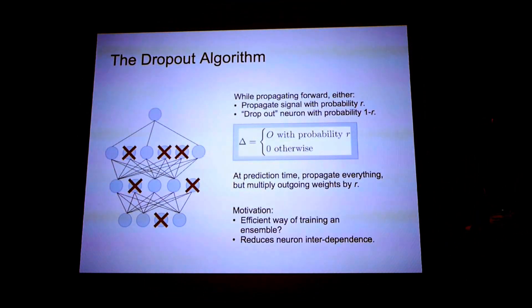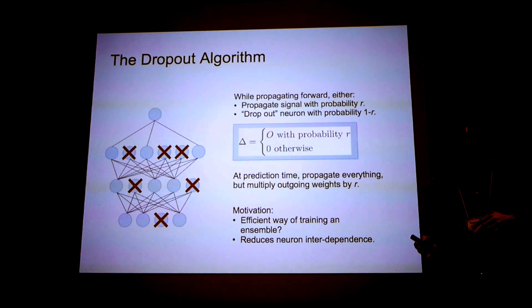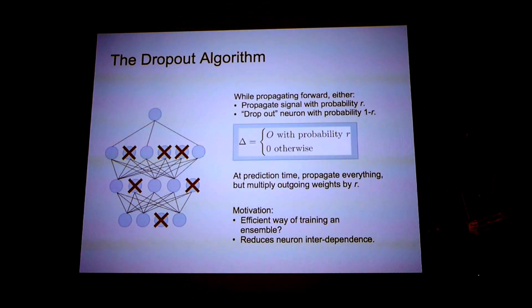The motivation for doing this, there's two main motivations. One of them is that we have this understanding that we are efficiently training a large ensemble of different neural networks with tied weights. So this might be an efficient way of doing massive ensemble averaging. And the final deterministic prediction approximates the average of this ensemble.